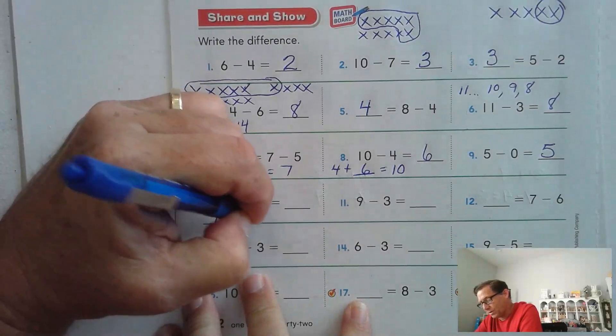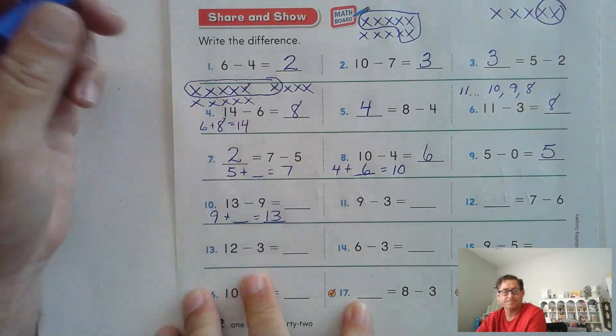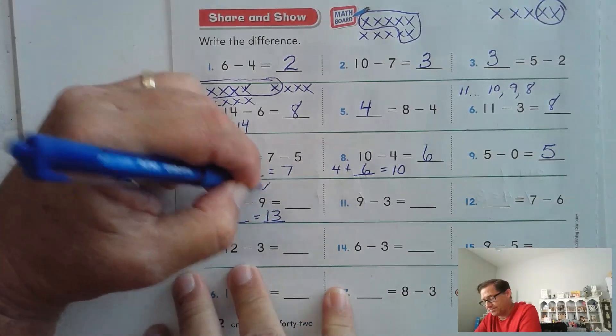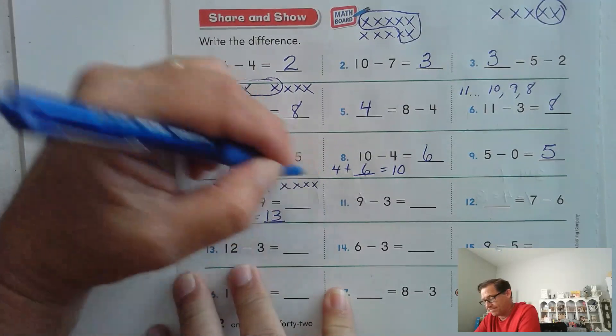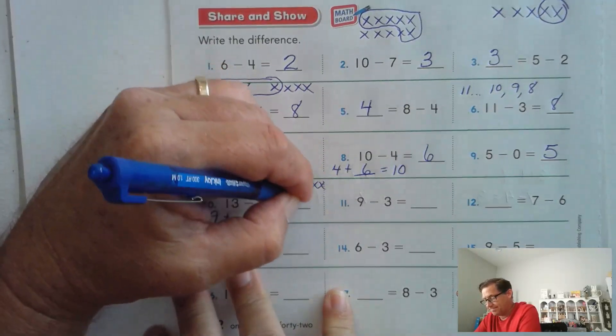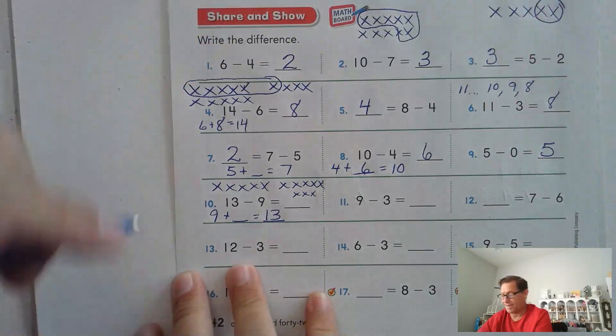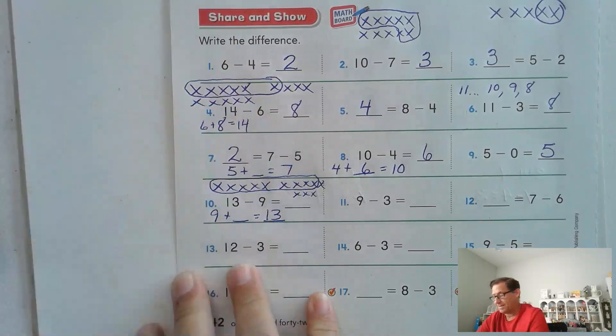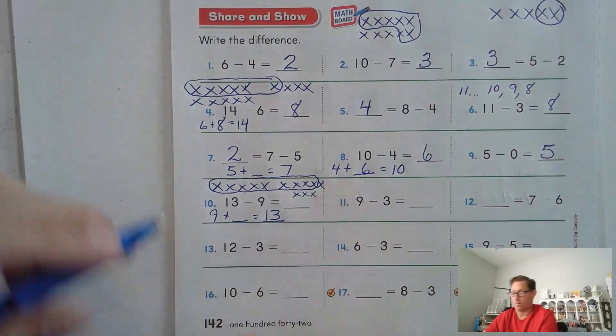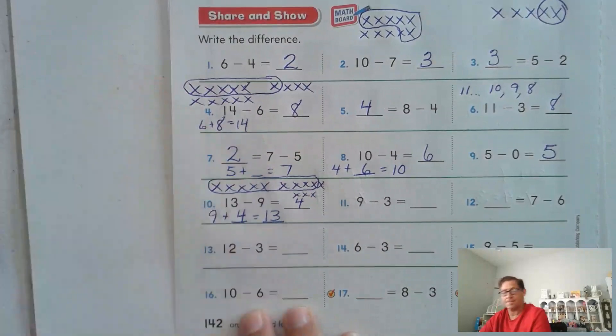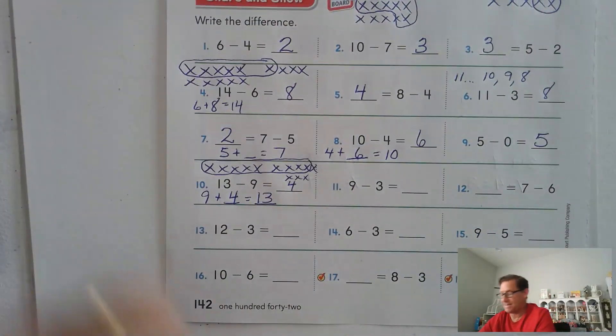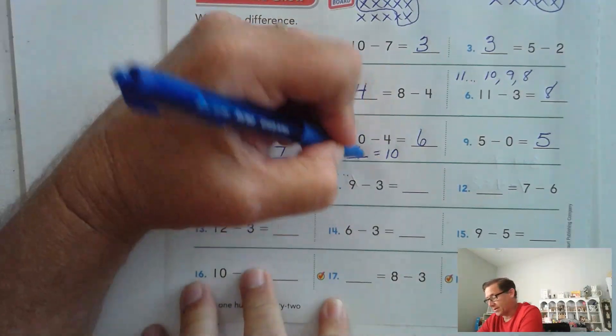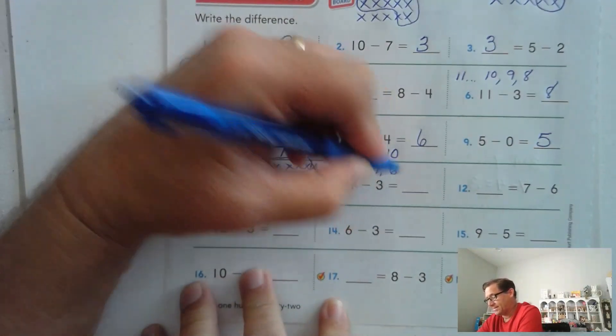13 minus 9. 9 plus what is 13? If we're not sure, we can draw a picture. 5, 10, 13. And we have to take away 9: 5, 6, 7, 8, 9. And that leaves us 4. 9 minus 3. I'm going to start at 9, take away 3 by counting backwards: 8, 7, 6.